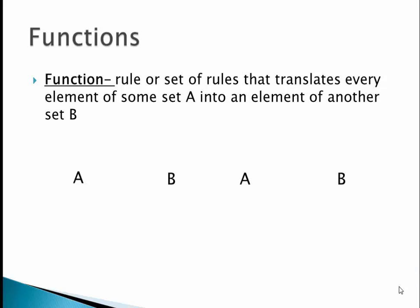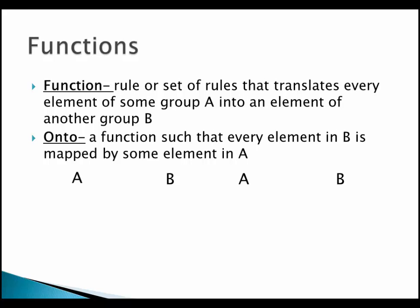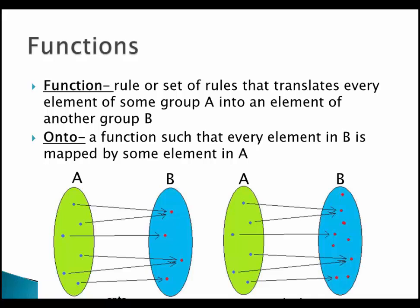First we want to review functions. A function is a rule or set of rules that translates every element of some set A into an element of another set B. A specific type of function is an onto function, which is a function such that every element of B is mapped by some element in A. Looking at the picture on the left, we can see an onto function from A to B, and a counter-example where elements in B are not mapped by any element of A.